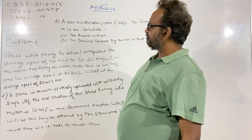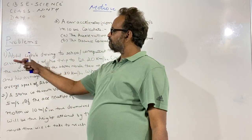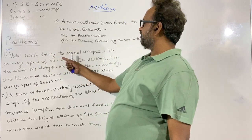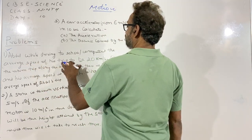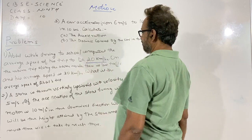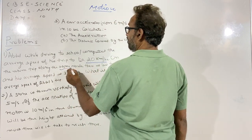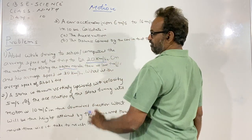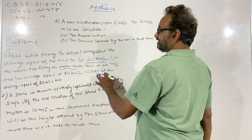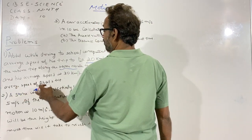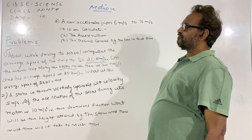Now without wasting time, the first problem is an NCERT problem. Abdul, while driving to school, computes the average speed of his trip to be 20 km per hour. On the return trip along the same route — mind it, along the same route — there is less traffic and his average speed is 30 km per hour. What is the average speed of Abdul's trip? Now we have to calculate average speed.